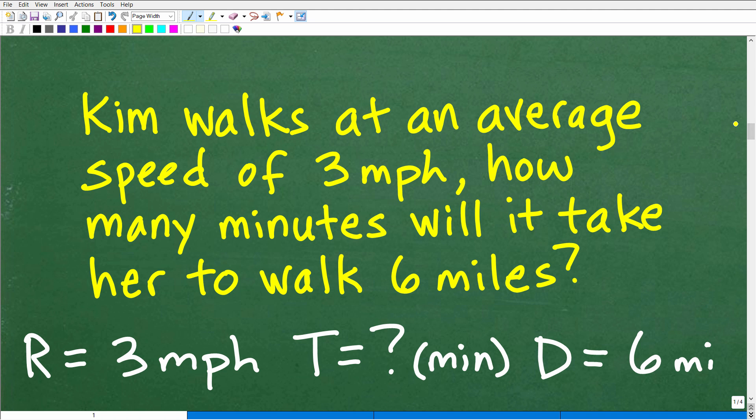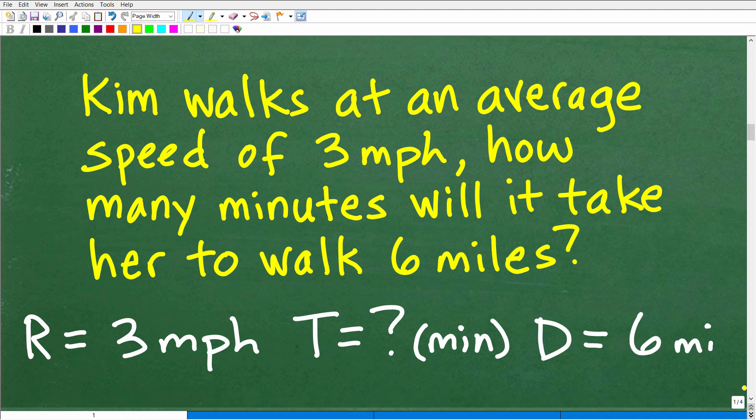Kim walks at an average speed of 3 miles per hour. How many minutes will it take her to walk 6 miles? We are dealing with a word problem. Anytime you're dealing with a math word problem or algebra word problem, you want to read it at least three times. Read it once, get a sense of what's going on, read it again, get more details. The third time, really make sure you understand the question being asked. We're looking for how many minutes it took for Kim walking at 3 miles per hour to cover 6 miles. To solve this, we need to understand the rate times time equals distance formula.